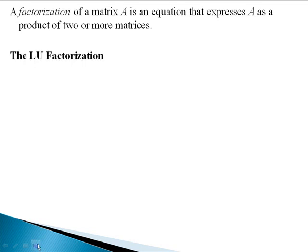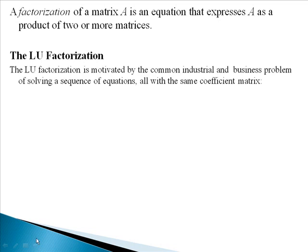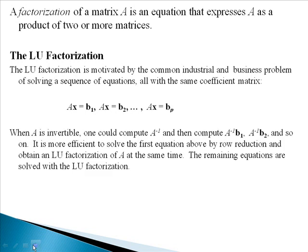The LU factorization is motivated by the common industrial and business problem of solving a sequence of equations, all with the same coefficient matrix. When A is invertible, one could compute A inverse and then compute A inverse times the vectors B1, B2, and so on. It is more efficient to solve the first equation by row reduction and obtain an LU factorization of A at the same time. Then the remaining equations are solved with that factorization.